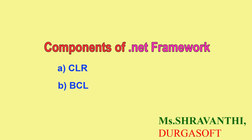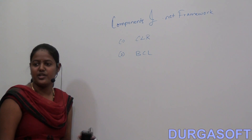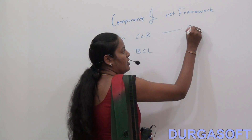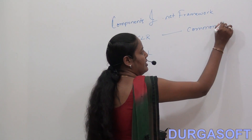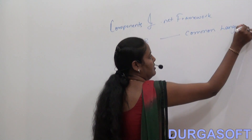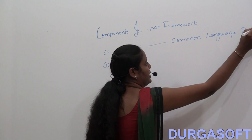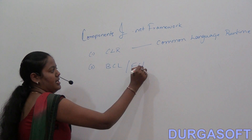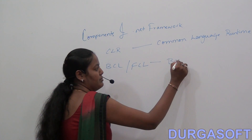In .NET we have two main important components of the .NET Framework. The first is CLR, which stands for Common Language Runtime, and the second is BCL or FCL, that is Base Class Library or Framework Class Library.